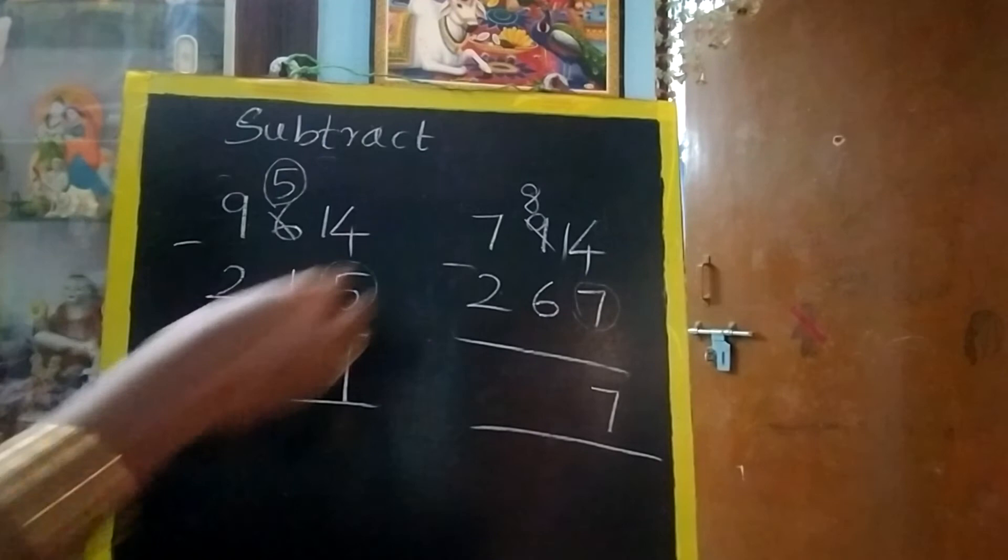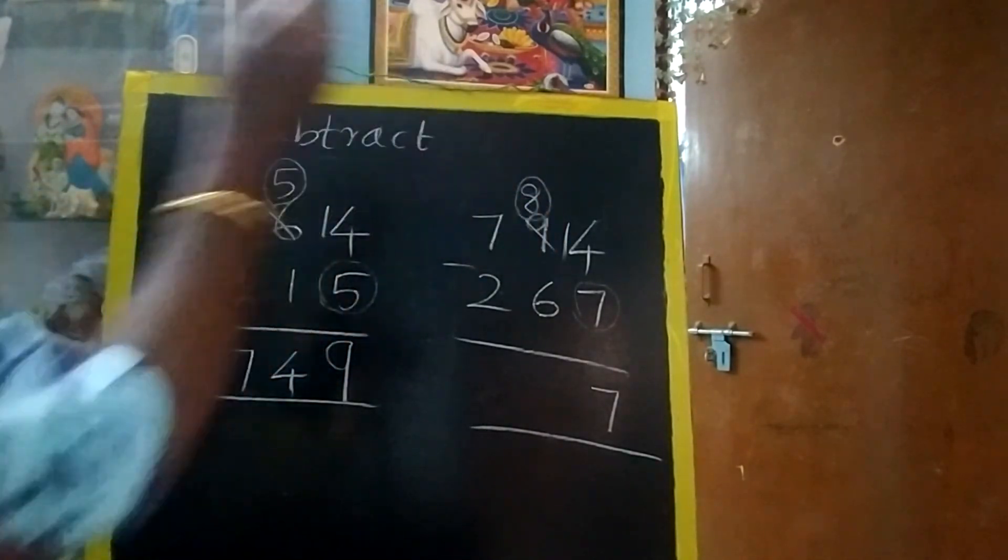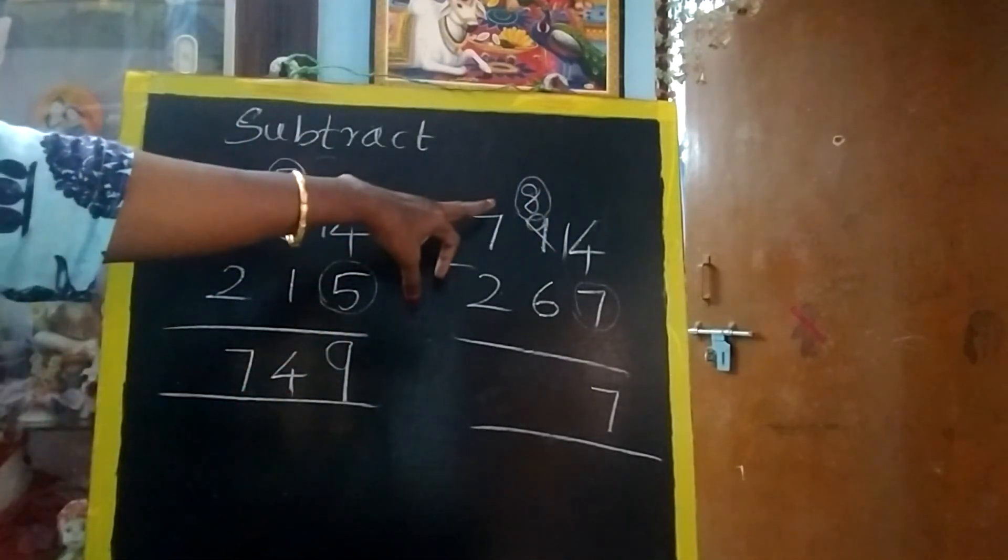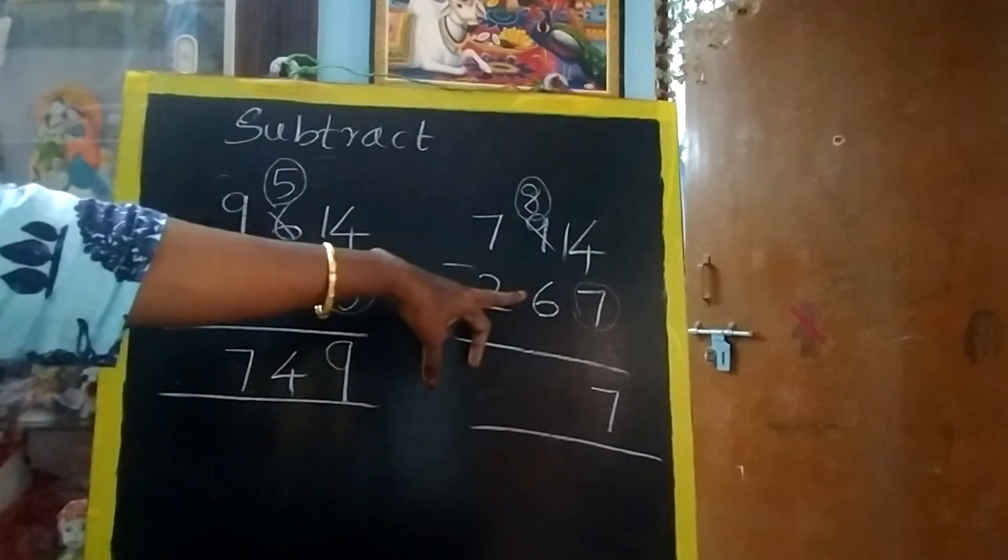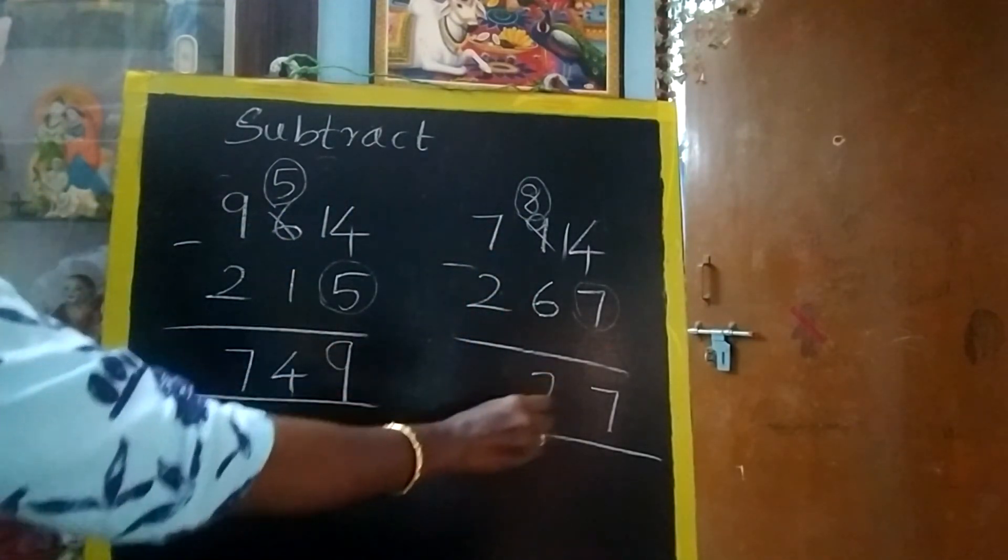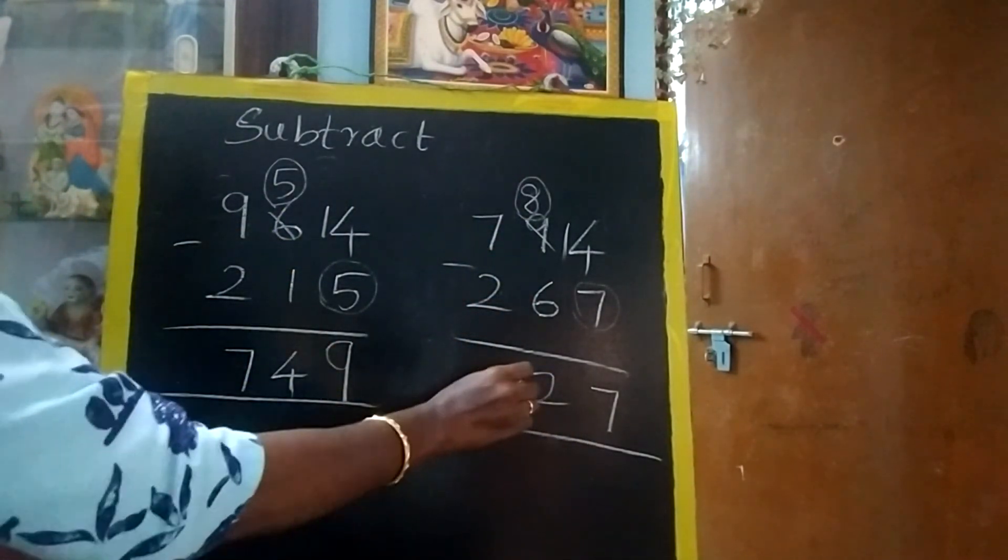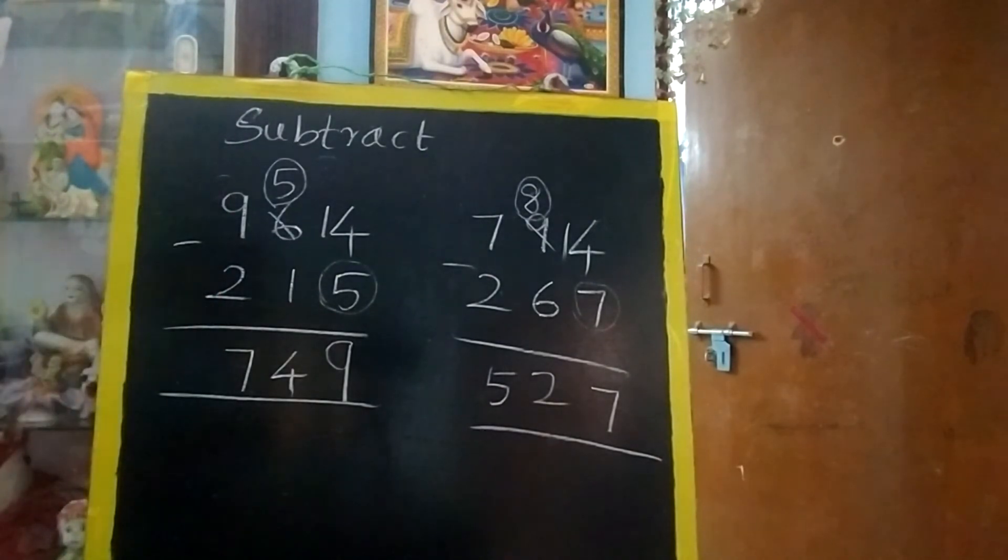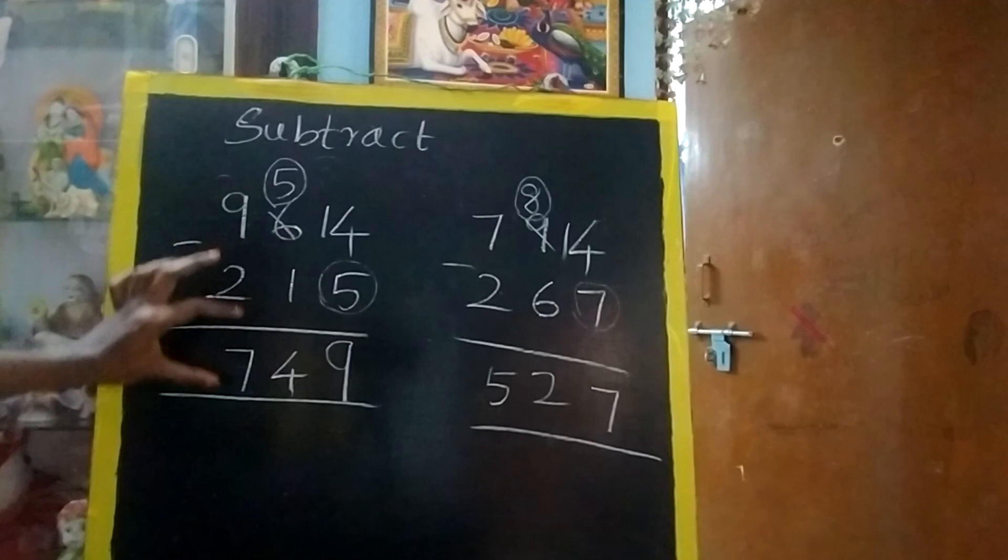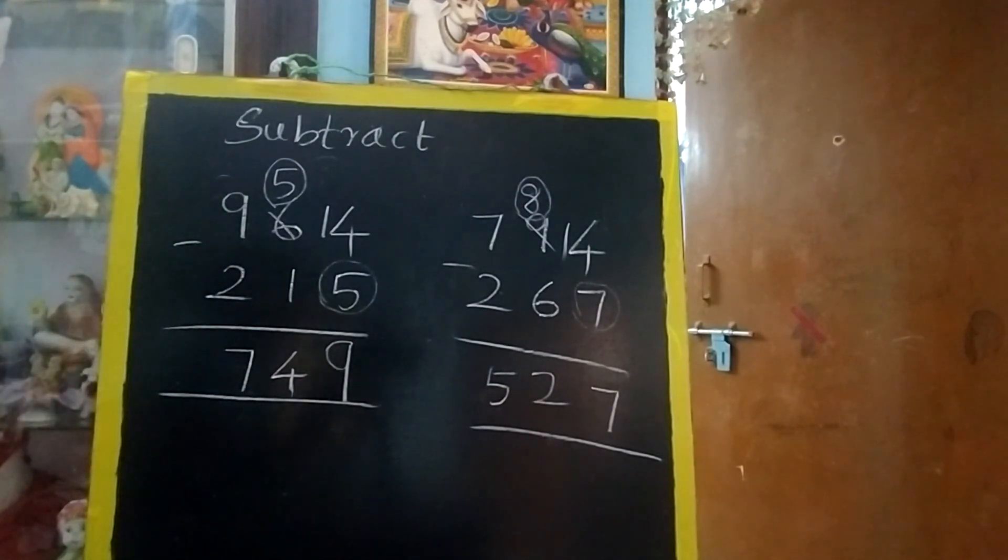Again you have to use circle. If the circle is top, no need to borrow. Direct subtraction. 7 minus 2, 5. So write one number in one box. So what are the terms? This is called minuend, subtrahend, and difference.